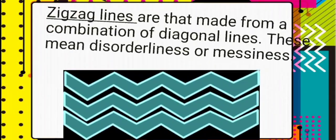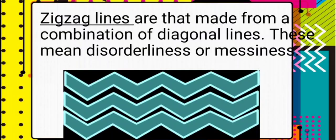Next are zigzag lines. Zigzag lines are made from a combination of diagonal lines. They represent disorderliness or haziness. Here is our example of zigzag lines.